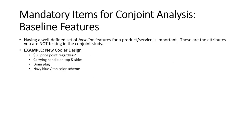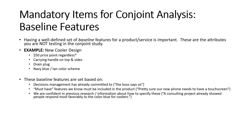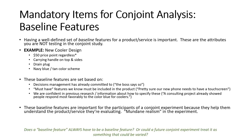It's important to have a well-defined set of baseline features. In this scenario, we're designing a new cooler that we're going to be bringing to market. Some of the baseline features that we're not altering in this experiment include a $50 price point regardless of the features, a carrying handle on top and sides with a drain plug, and a navy blue or tan color scheme. These baseline features may come from management direction, known must-have features, or previous research. For example, if we're designing a new phone, we know we're going to have to include a touch screen. We show these baseline features during our study to make sure that the person responding understands what they're evaluating — this is one way that we increase mundane realism in our conjoint experiment.